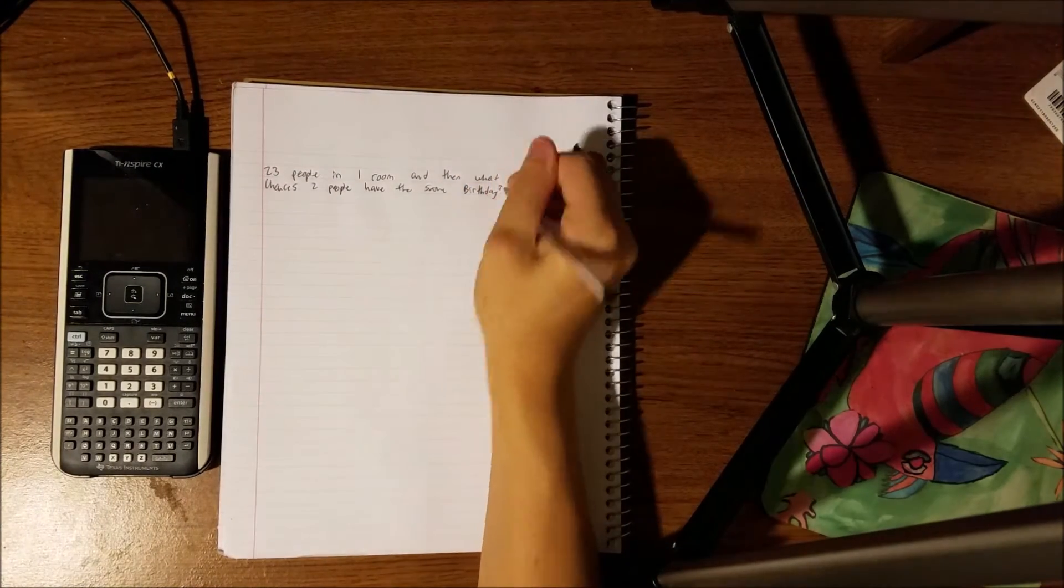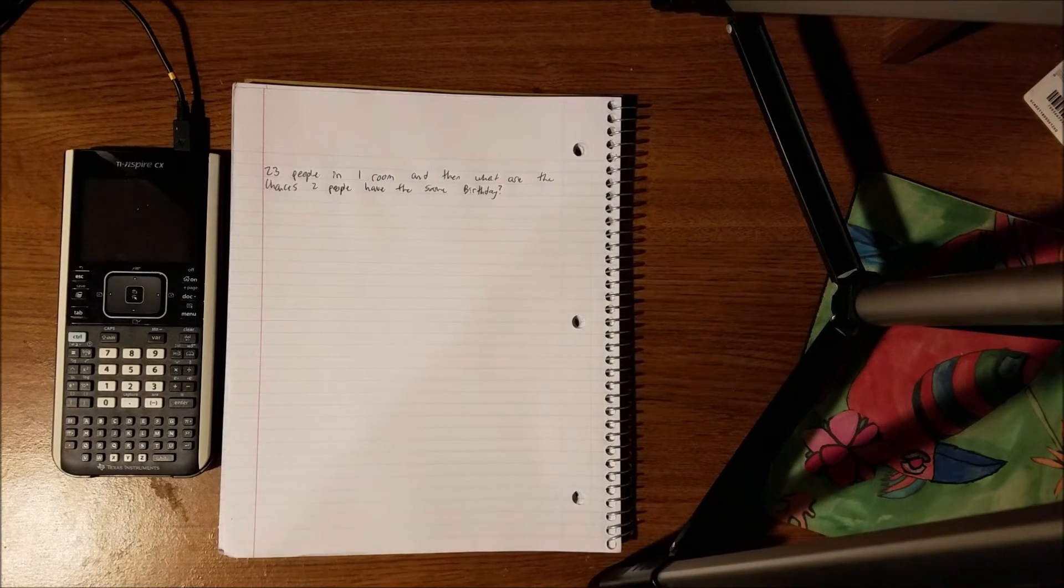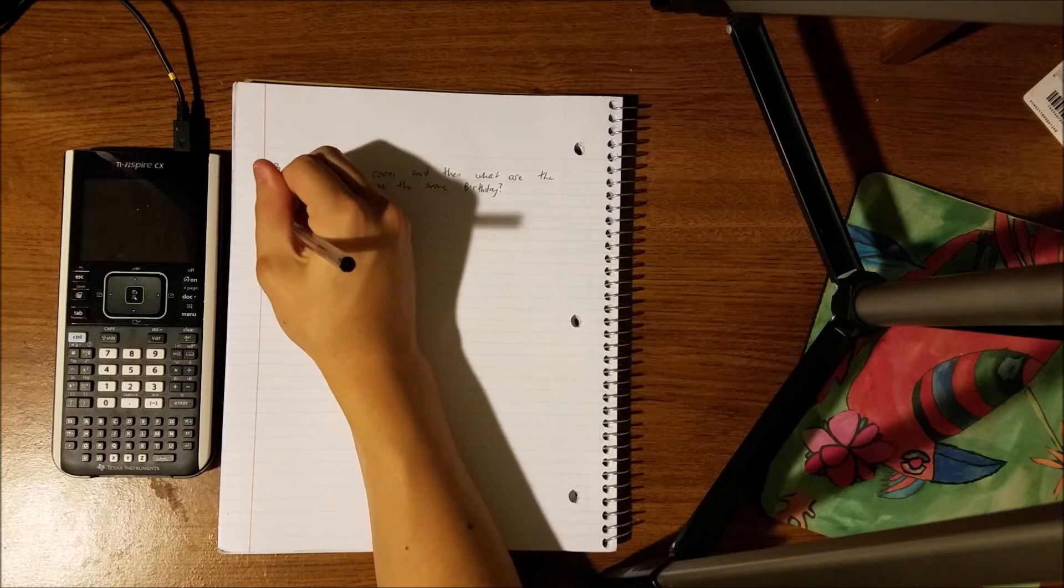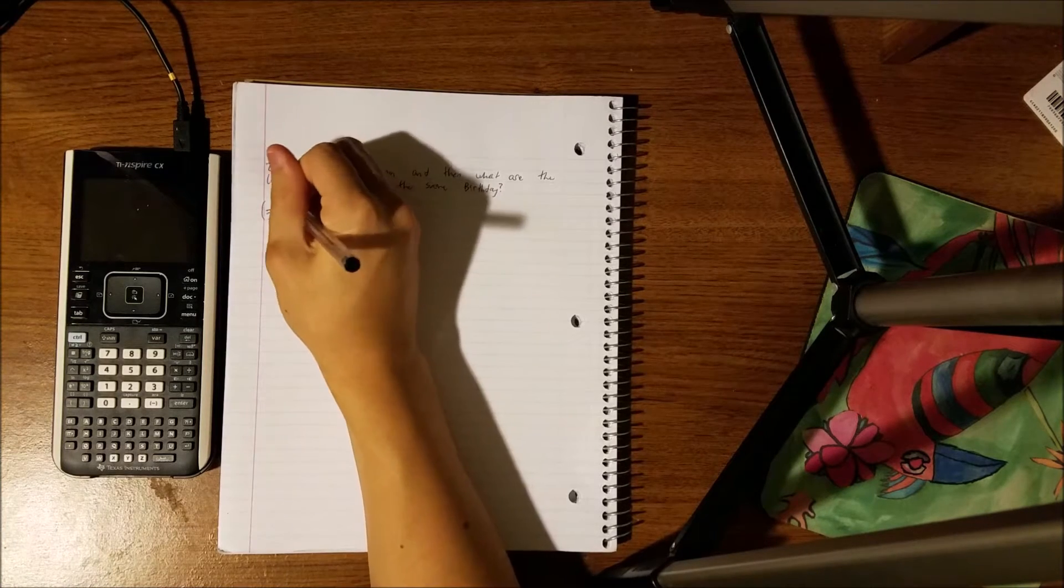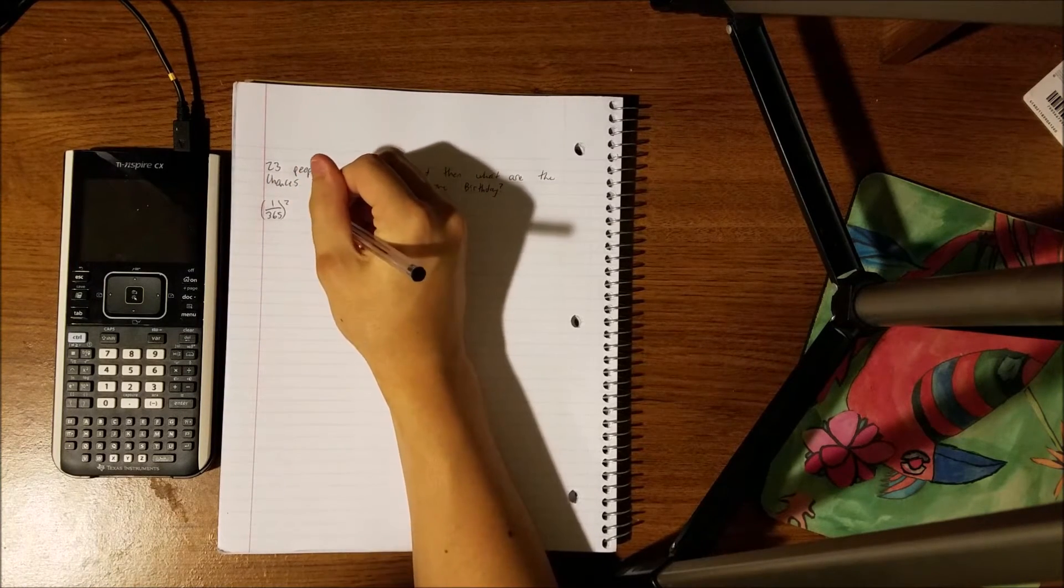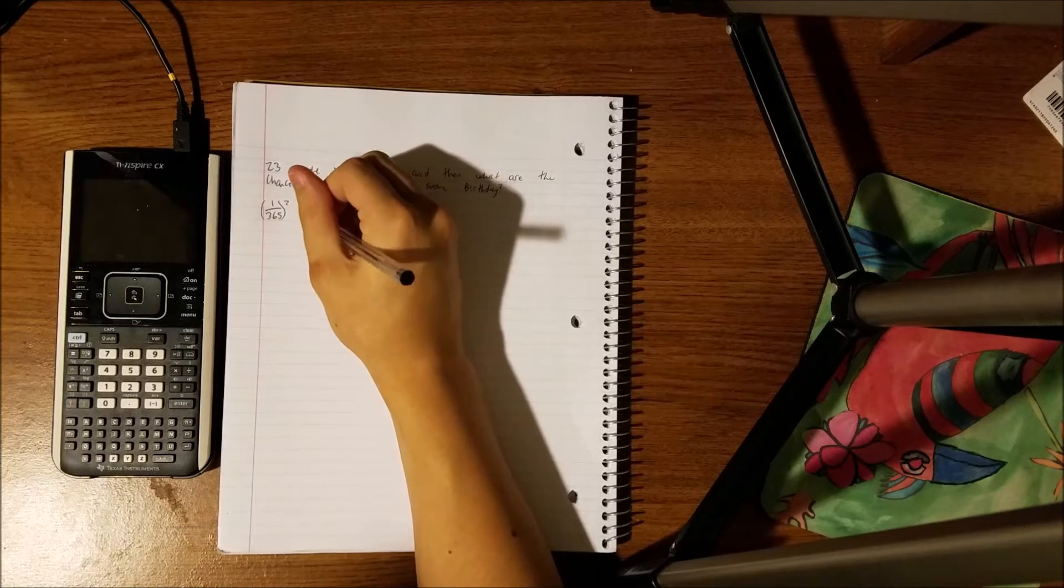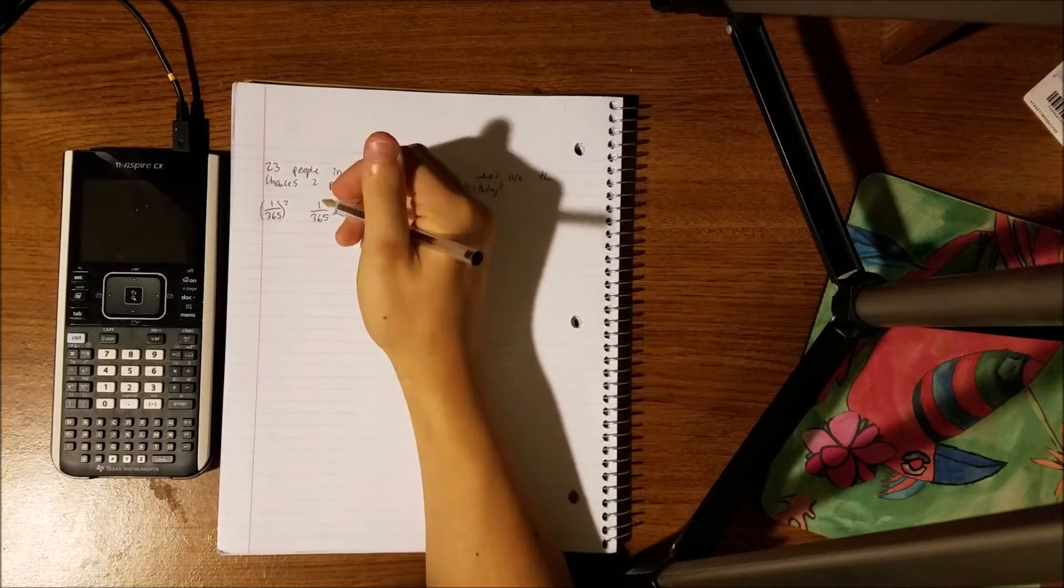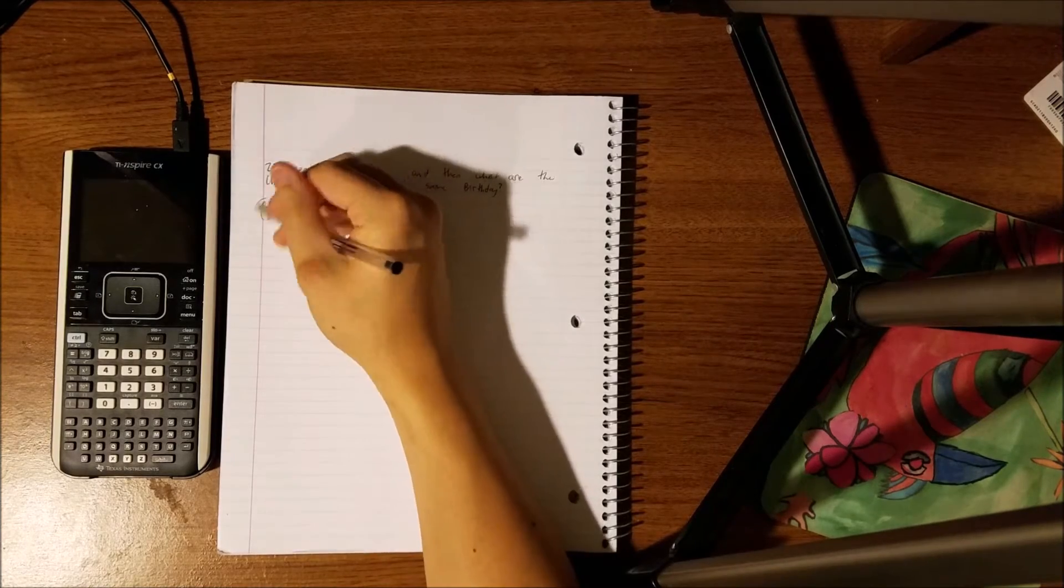All right, so many people think that it is 1 over 365 squared. Some people might think it's just 1 over 365 times 1, but that just cancels out, so just 365,